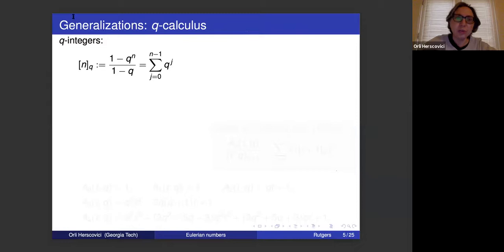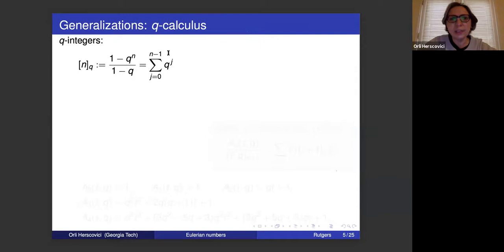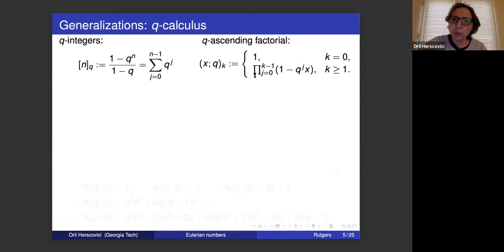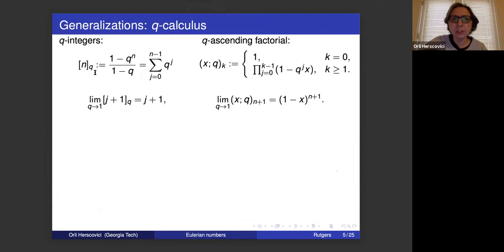To generalize the Eulerian numbers, we need a few terms from q-calculus. The q-integer [n]_q is given by the ratio (1 - q^n)/(1 - q), which can also be presented as a sum of q^j. We also need the q-ascending factorial, denoted (x; q)_k, which is a product of k terms of the form (1 - q^j * x). As q approaches 1, the q-integer [j+1]_q approaches j+1, and the q-ascending factorial approaches the power (1-x).